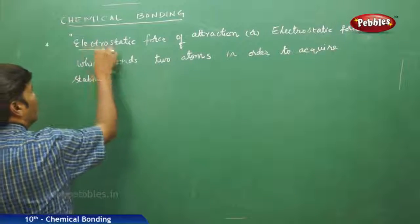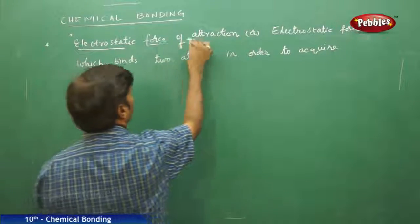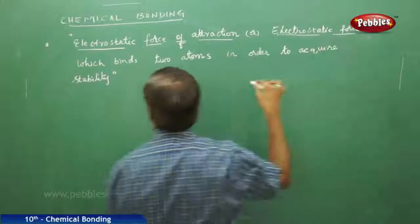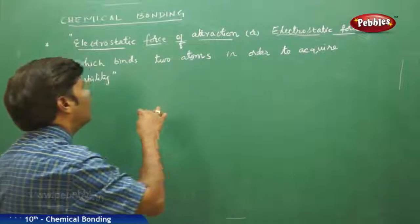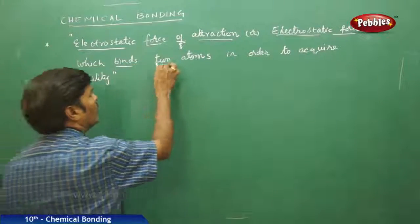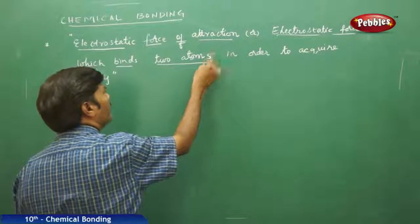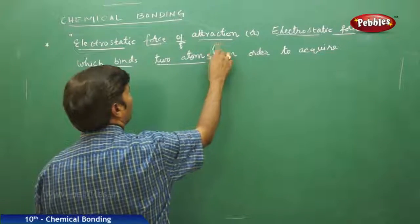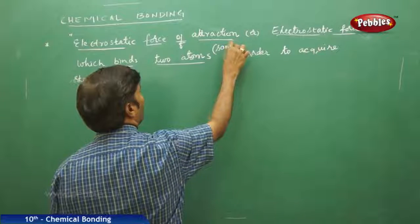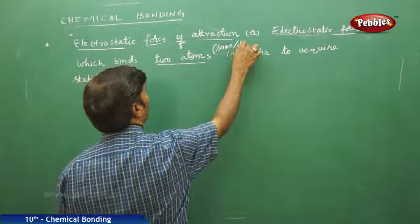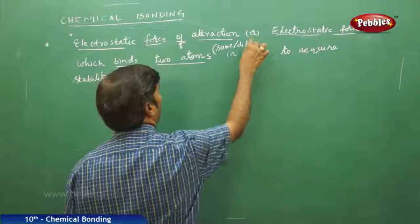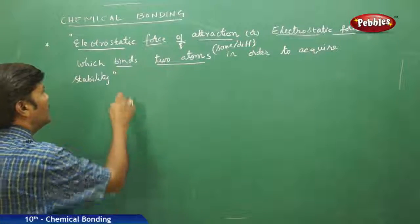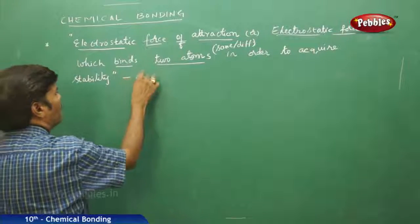The electrostatic force of attraction, or simply electrostatic force, which binds two atoms — the two atoms may be same or they may be different — in order to acquire stability, is simply called a chemical bond.